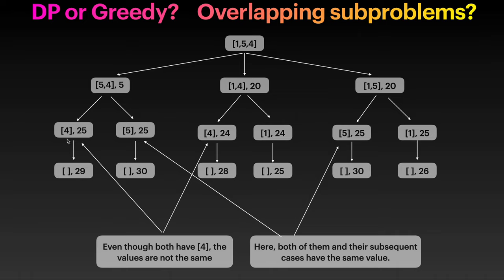If you look here, you are left with balloon 4. Here the same thing, but the number of coins is 25 for one and 24 for the other. For this one you are left with balloon 5, and your number of coins is still the same. When you pop a balloon it disappears, and that's what makes this problem challenging. Starting from [1, 5, 4], it is not obvious you can find overlapping sub-problems, so we have to think about this problem from backward.